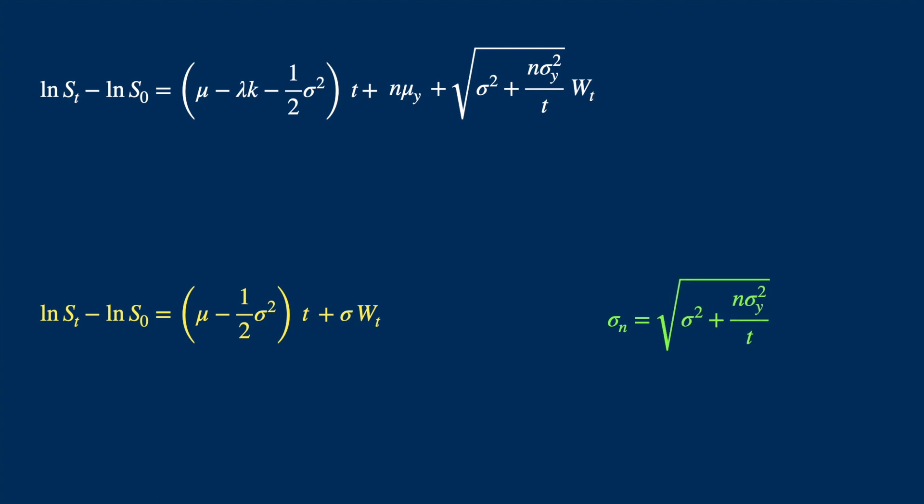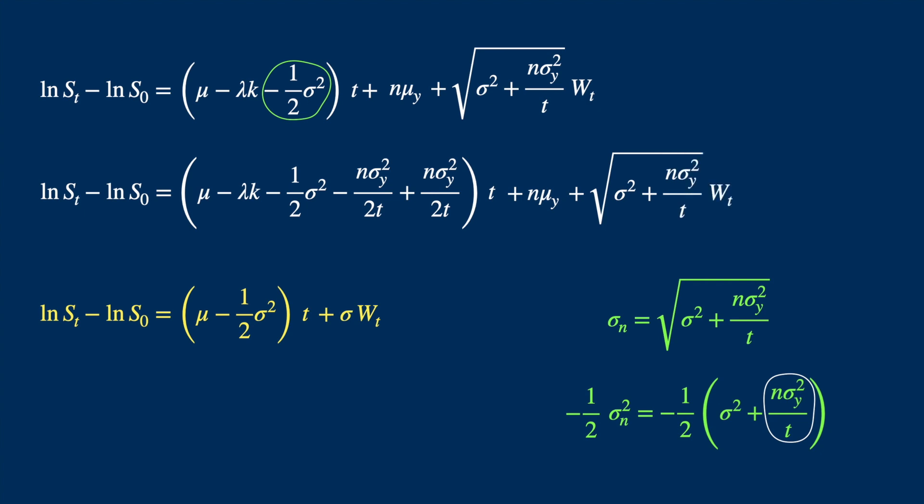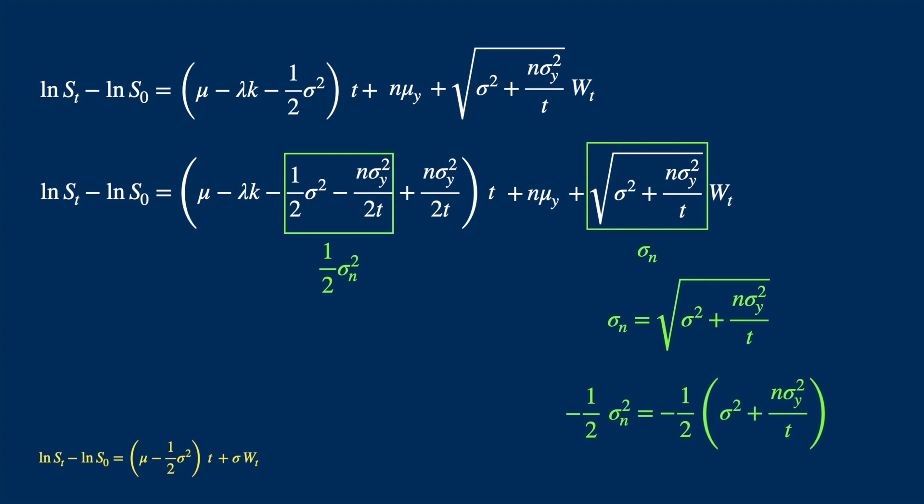Now we need the minus 1 divided by 2 times the square of this term in the drift. So let's square it, and then multiply both sides by minus 1 divided by 2. We already have 1 divided by 2 sigma squared, so let's add and subtract the second term. And we keep the rest the same. Now these terms are equal to minus 1 divided by 2 sigma underscore n squared, and of course the coefficient of W is equal to sigma underscore n.